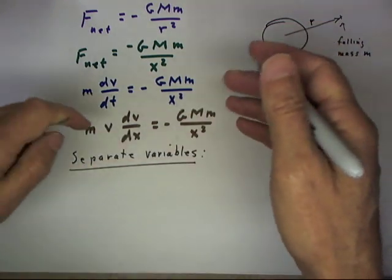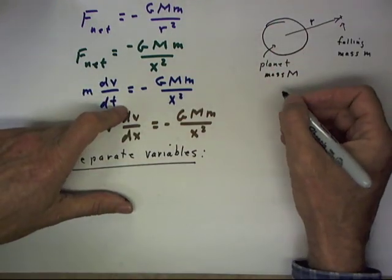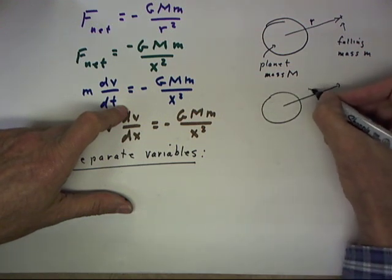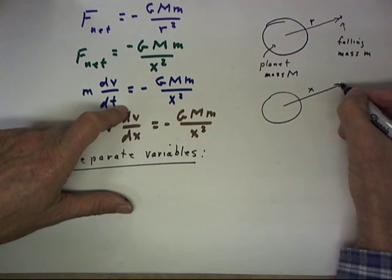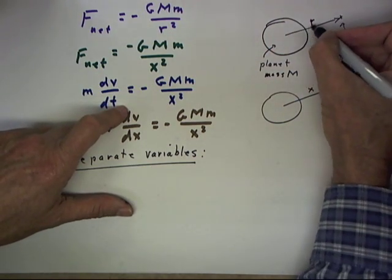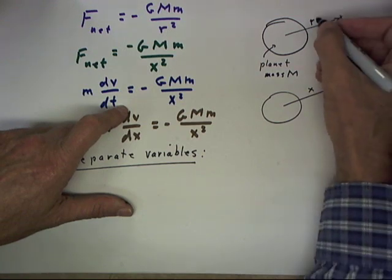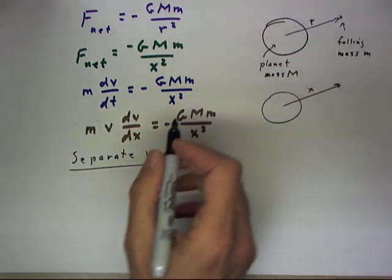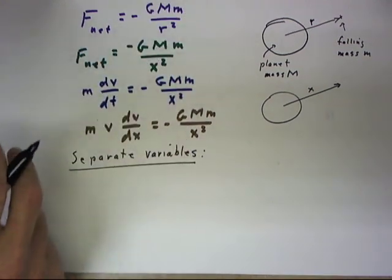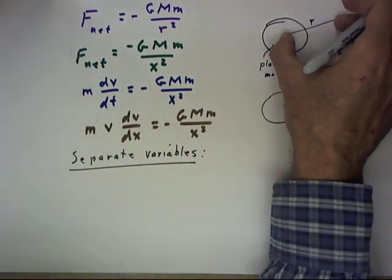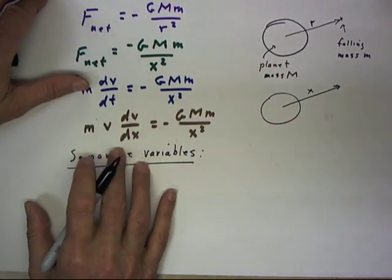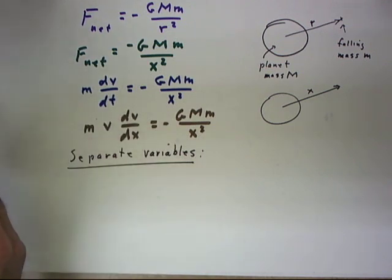Now, just to make the notation more familiar, instead of R, we'll just call this distance X to avoid possible confusing connotations with the letter R. So I'm going to change the name of the variable from R to X, but it has the same meaning, and this equation could certainly be solved in the same manner with the variable R.